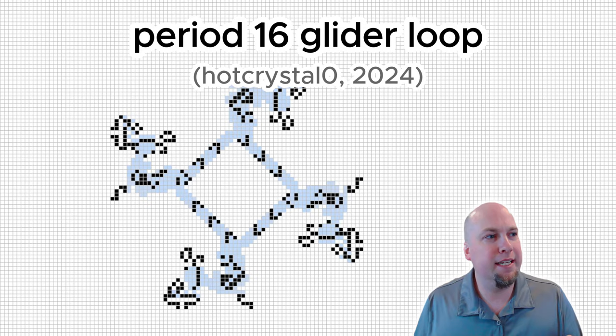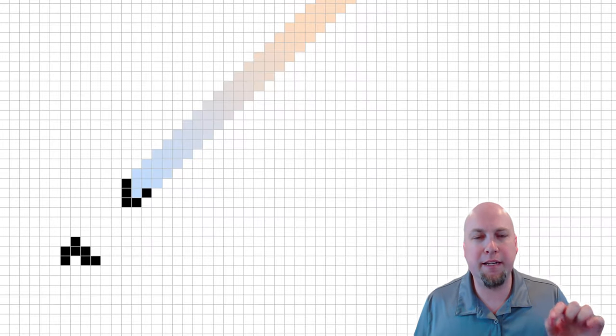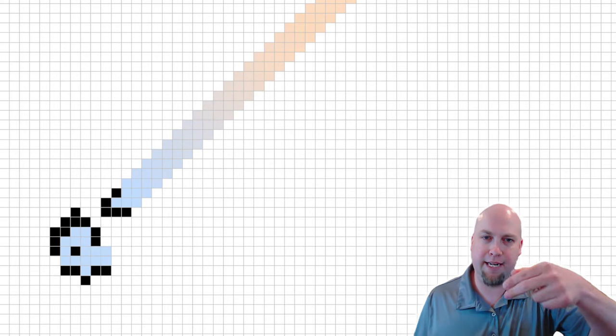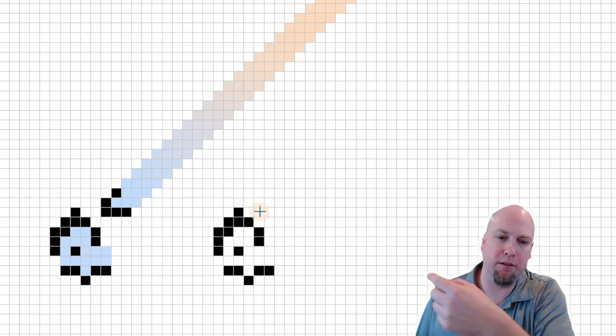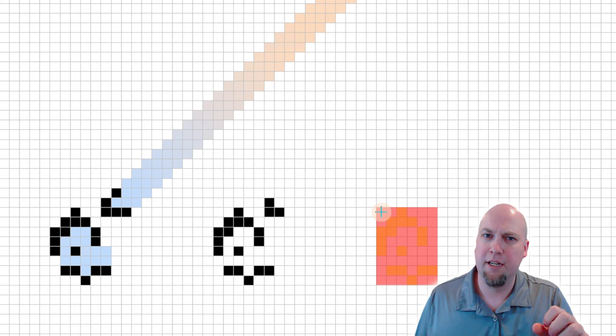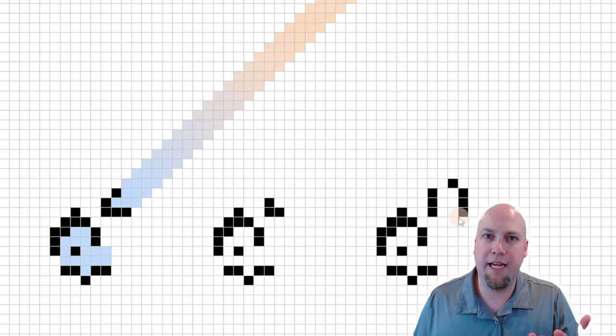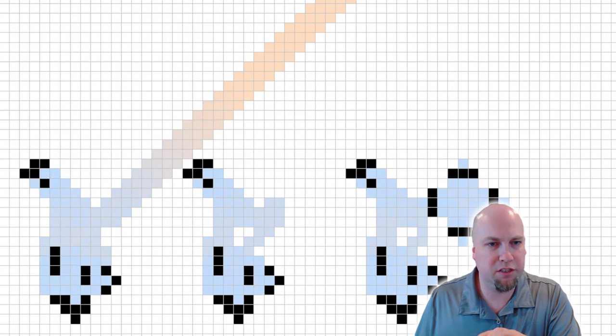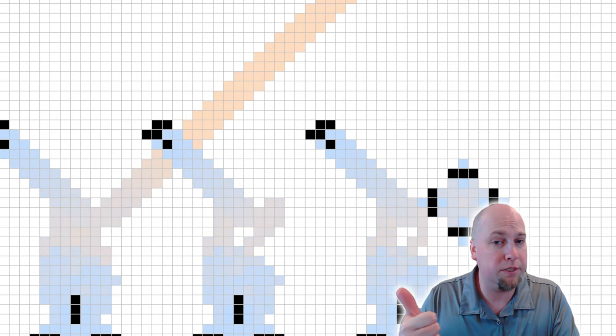But the key insight is that it doesn't have to be a glider that's used as the input to this reaction. It doesn't have to be a glider in to hit the B-heptomino for a glider out. You can replace that input glider by lots of other configurations, actually, and the reaction is still going to work the same way. The B-heptomino is still destroyed and you still get a glider out.